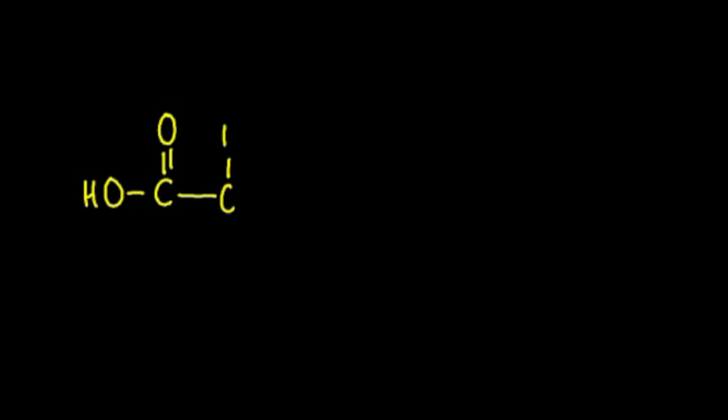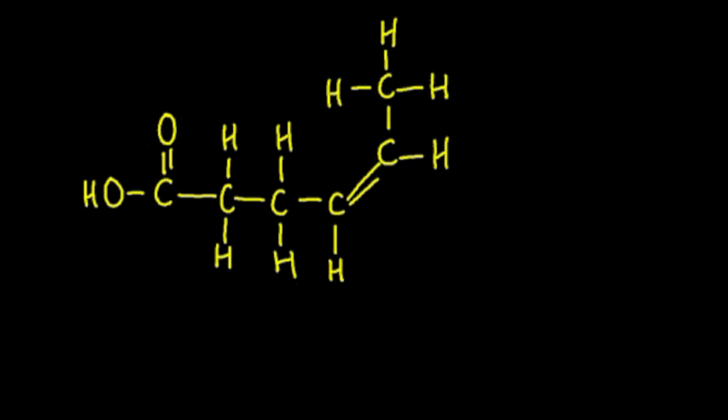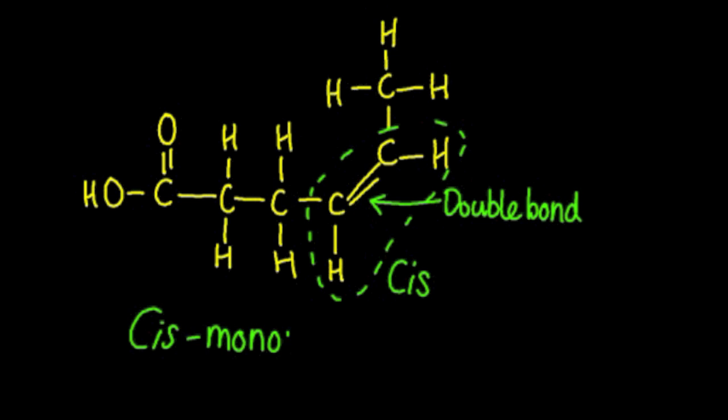Now if the carbons that are connected by a double bond have their respective hydrogens on the same side, as far as the diagram goes, this creates what's known as a cis unsaturated fatty acid. Once again, monounsaturated because there's only one double bond.